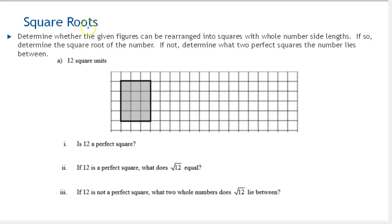In this video, we're going to learn about square roots. Determine whether the given figures can be rearranged into squares with whole number side lengths. If so, determine the square root of the number. If not, determine what two perfect squares the number lies between. So we're given this rectangle, it's 12 square units. We can count them 1, 2, 3, 4, 5, 6, 7, 8, 9, 10, 11, 12. But it's a rectangle, it's not a square. So we are going to try to arrange it into a square and see if we can do that with whole numbers.